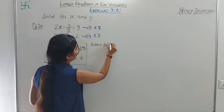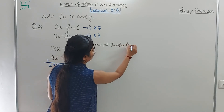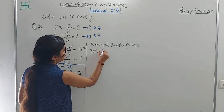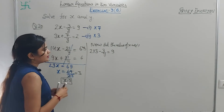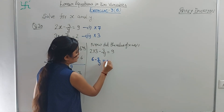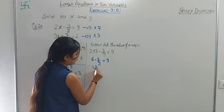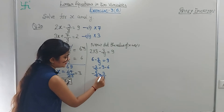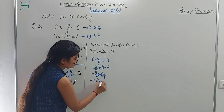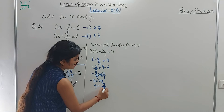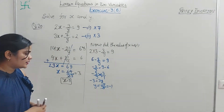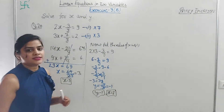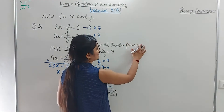Put x = 3 in equation 1: 2×3 - 3/y = 9. So 6 - 3/y = 9. Therefore -3/y = 9 - 6 = 3. Cross multiply: -3 = 3y. So y = -3/3 = -1. Therefore x = 3 and y = -1.